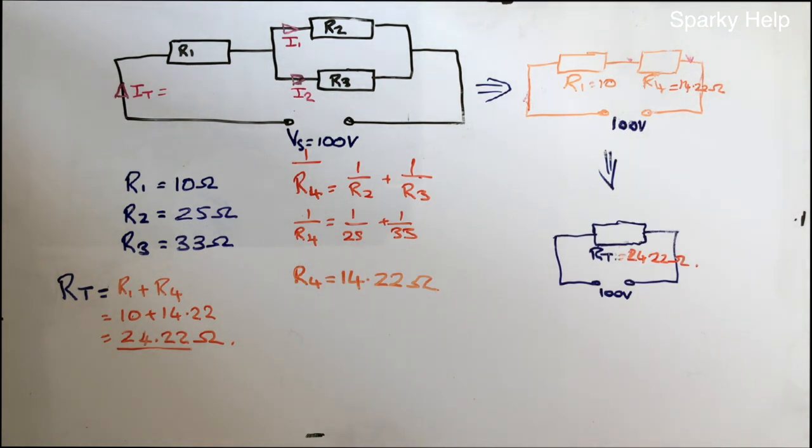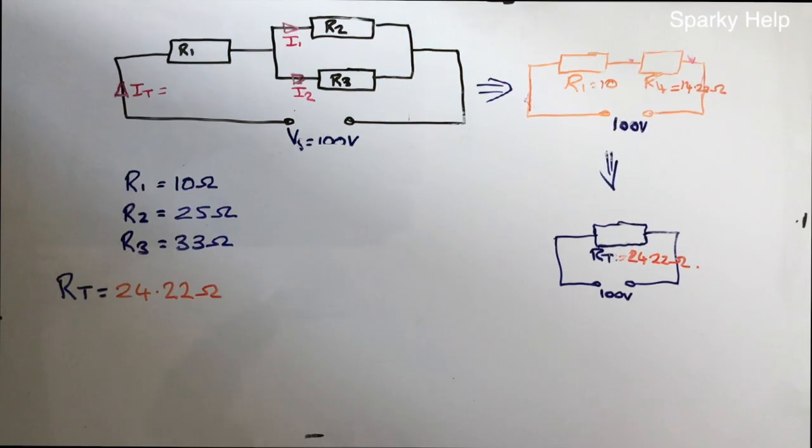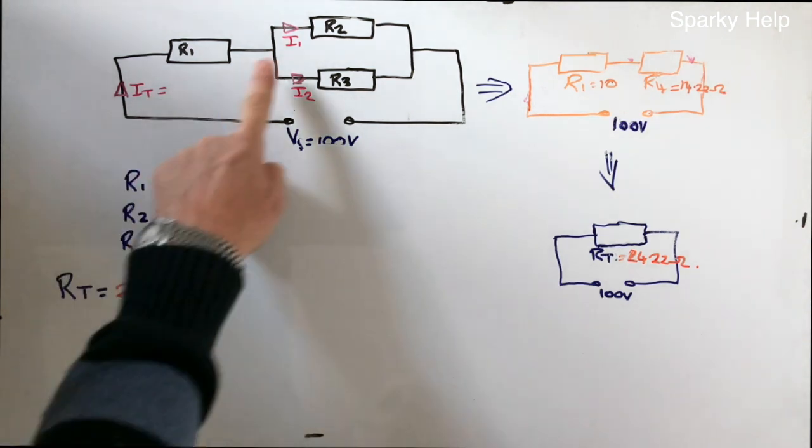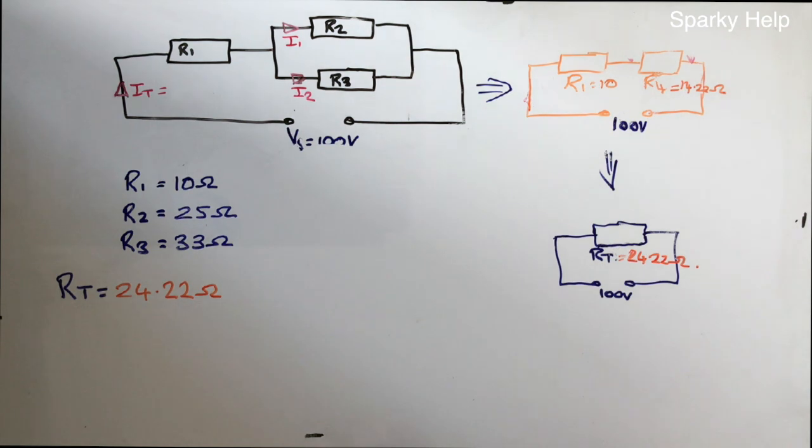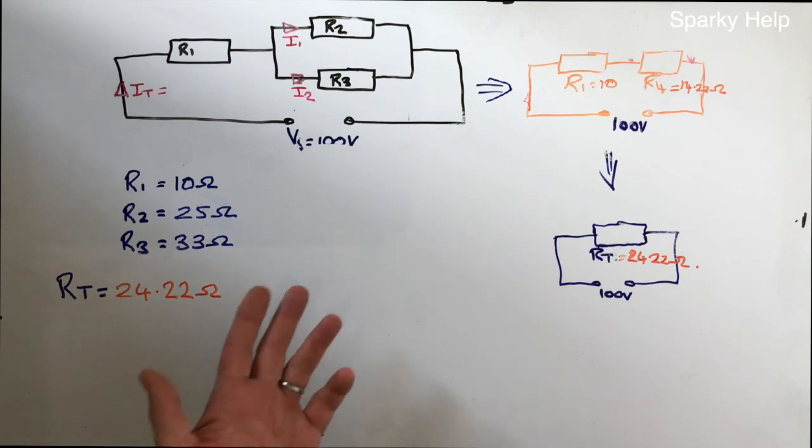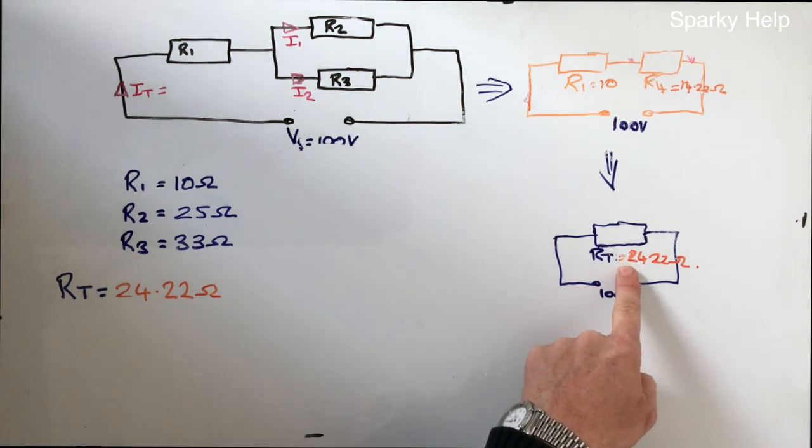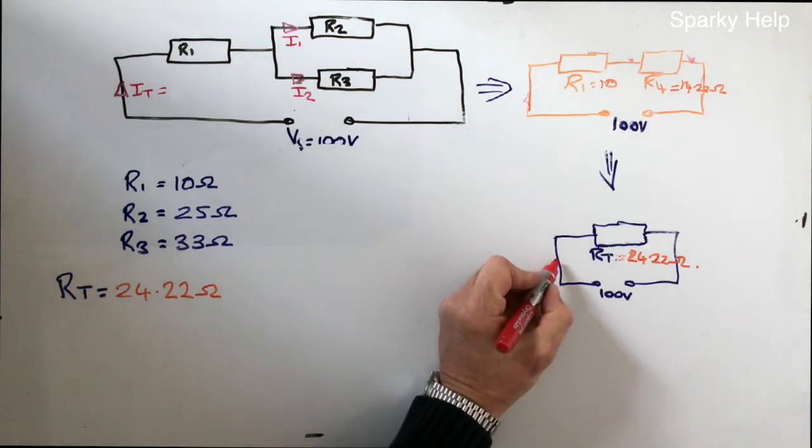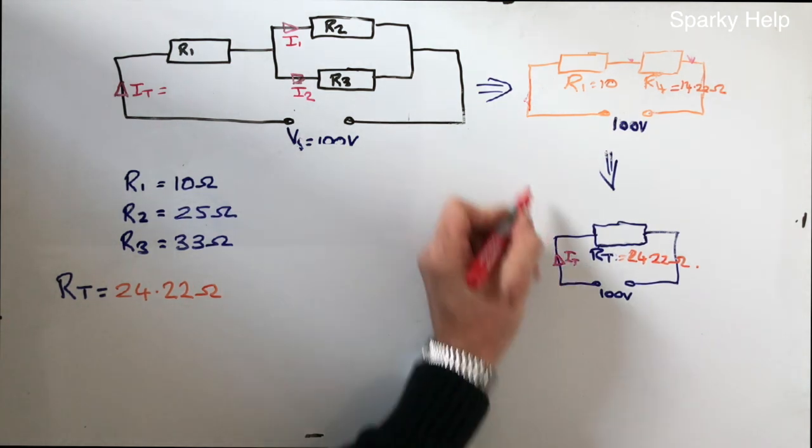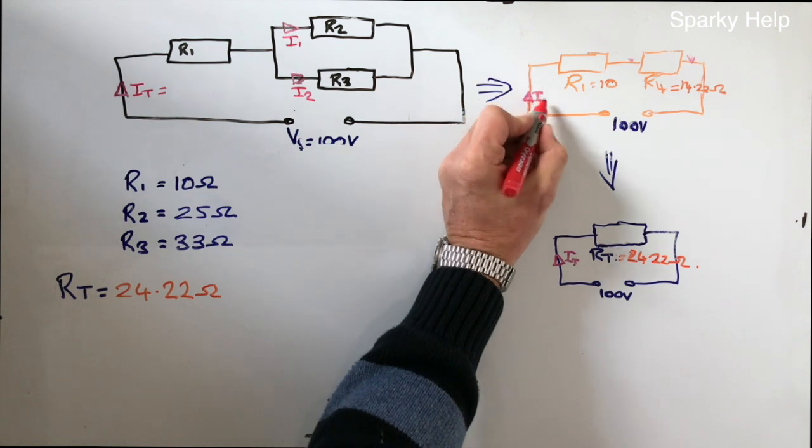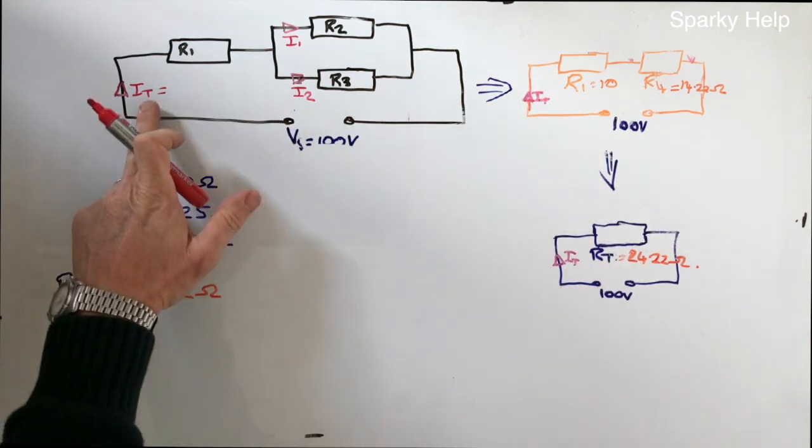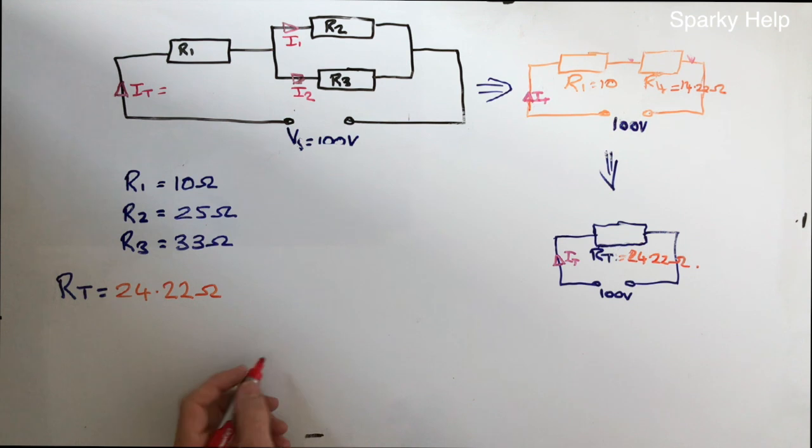What can we now do? We can now work out the currents. For these ones here. So work out the currents then. I'm going to work out IT, I1 and I2 as before. So let's start with IT. This is a nice simple one. Because we can just look at this here. Because remember, IT is here. It's also here. Because these are the same circuits. It's also there. So we can work it out here.